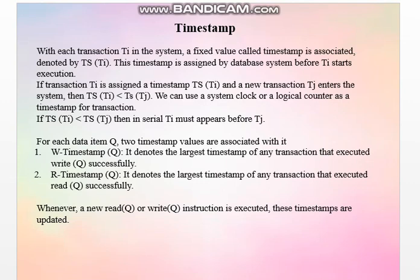The Timestamp Method is a method where we use timestamps for maintaining concurrency control in transactions. With each transaction Ti in the system, a fixed value called a timestamp is associated, denoted by TS(Ti). This timestamp is assigned by the database system before Ti starts its execution. If Ti has timestamp TS(Ti) and a new transaction Tj enters the system, then TS(Ti) must be less than TS(Tj). We can use a system clock or a logical counter as a timestamp for a transaction.